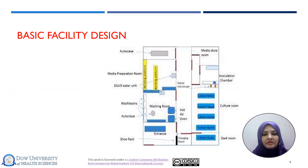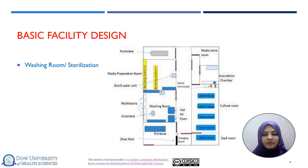Here are some basic facilities that are required for the tissue culture lab. The basic thing is that it can be categorized into four different parts. The first part is the washing room or sterilization room, where all consumables or glassware can be properly washed and sterilized.